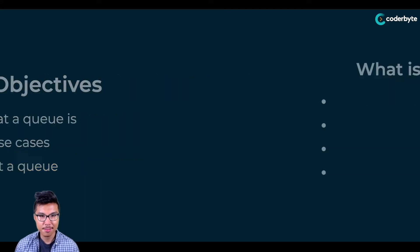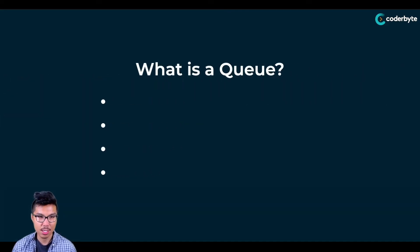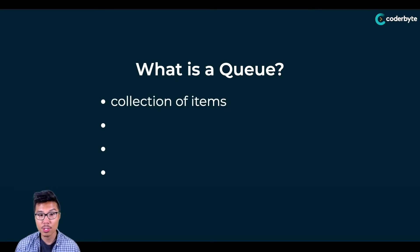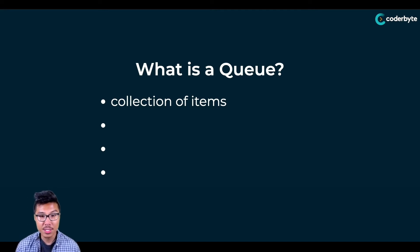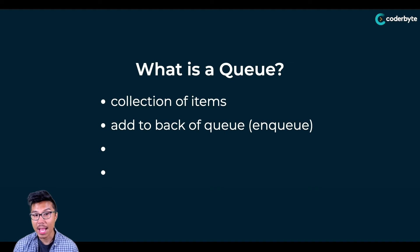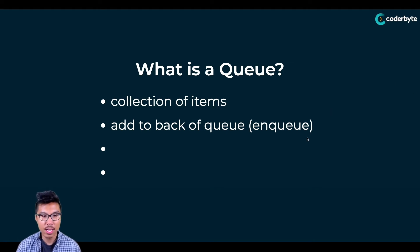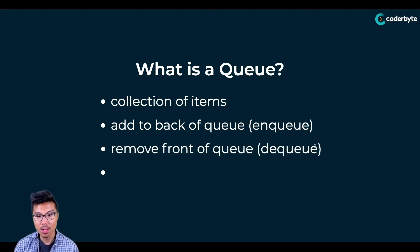So let's start from the beginning. What is a queue? A queue is a type of data structure that stores multiple items — you can think of it as a collection. The queue is really characterized by the operations we perform on it. Mainly, we can add to the back of the queue, which we call enqueuing a new item, and we can remove from the front of the queue, which we call dequeuing an item.